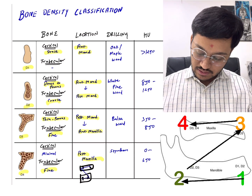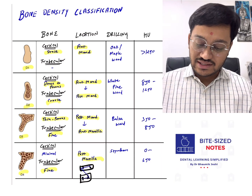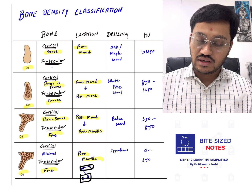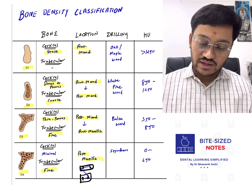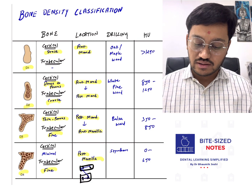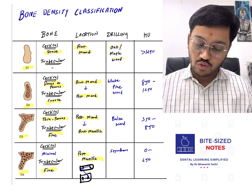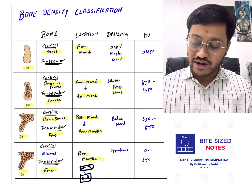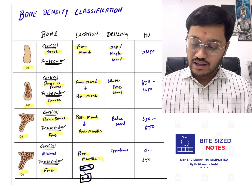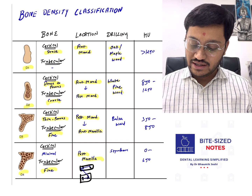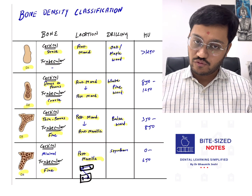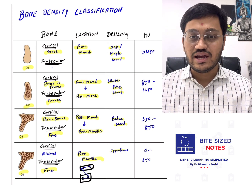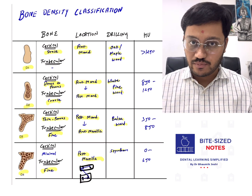When drilling in these types of bone, the tactile resistance you feel differs by type. In D1, you feel a hard resistance like drilling into oak or maple wood. D2 feels like drilling into white pine wood. D3 gives a feeling described as balsa wood. D4 is just like drilling into styrofoam.